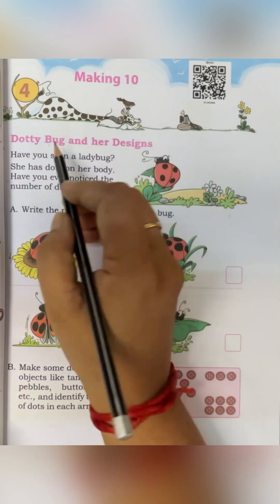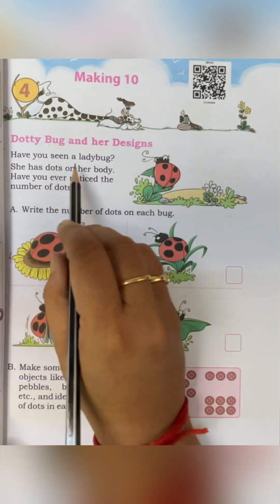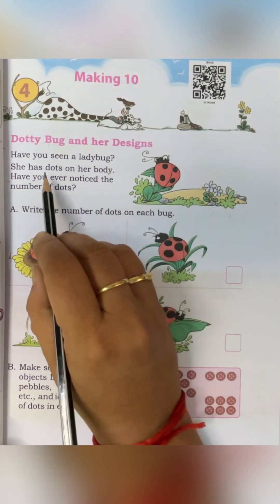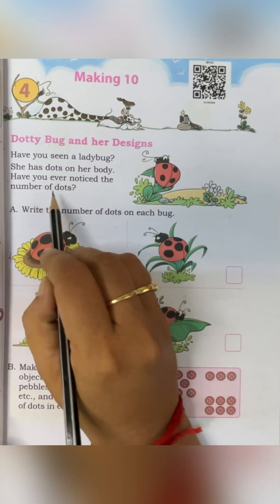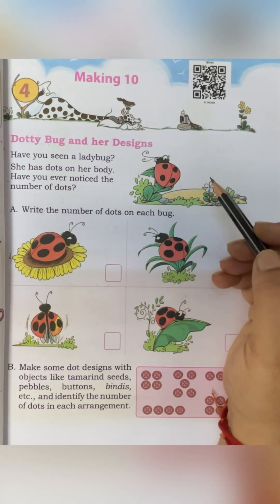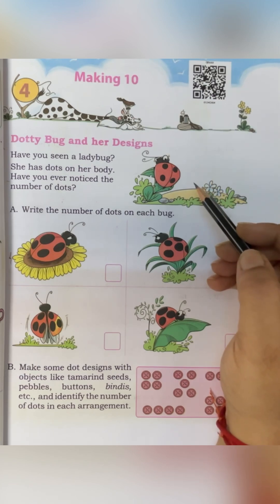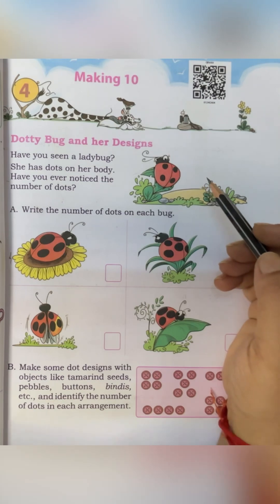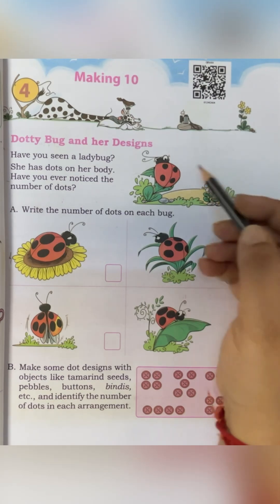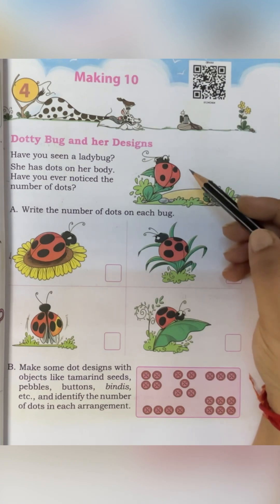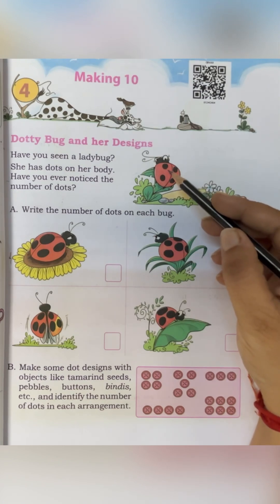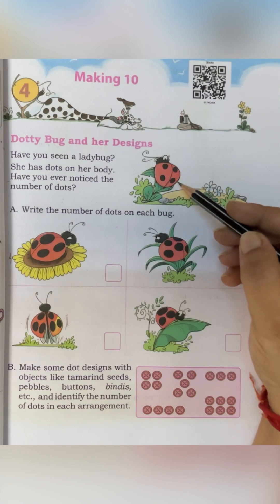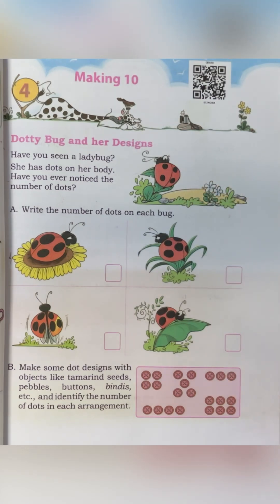Making 10 — Dottie Bug and her designs. Have you seen a ladybug? She has dots on her body. Have you ever noticed the number of dots? Actually it is quite tough to see a ladybug, but if you have been lucky enough to see it, it will be so small that it will be difficult for you to count the dots. In this picture we will see — this is a ladybug and there are 1, 2, 3, 4 dots.